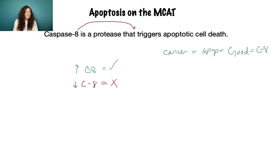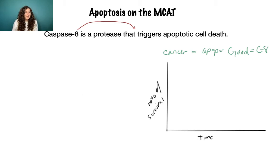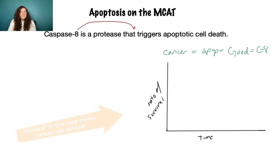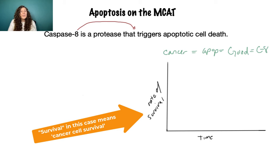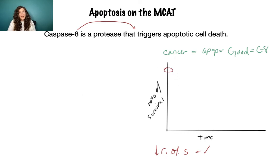We can go ahead and look at graphs and figures to see what they tell us about this new protein's function. They can show you a couple of different types of graphs. Here's one: we have time on the x-axis and rate of survival on the y-axis. If we're looking at treating cancer, we don't want a lot of survival — we want that rate of survival to go down. So for a cancer passage, decreased rate of survival equals good, and anything high up would be bad or not showing effective treatment.